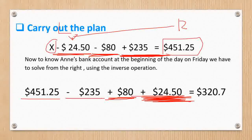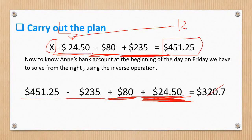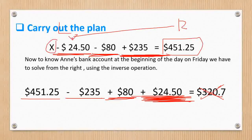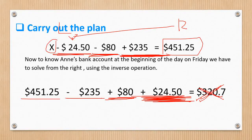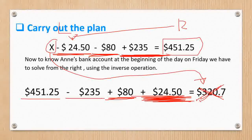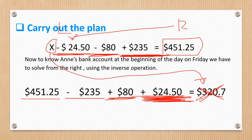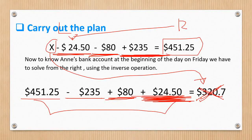Okay, and then, this should be X. Sorry, this should be first X equals. Now, if we are going to subtract $235 from $451.25 and eventually add $80 and then $24.50, it will give us a total of $320.75.